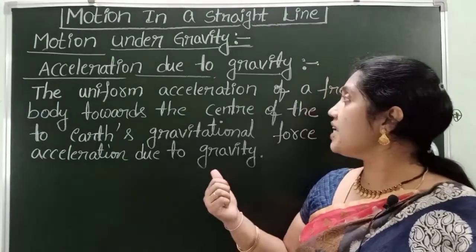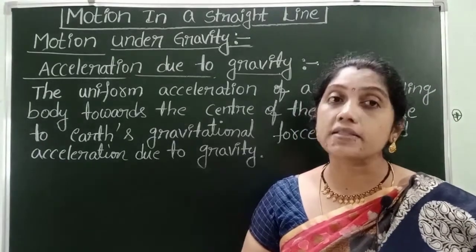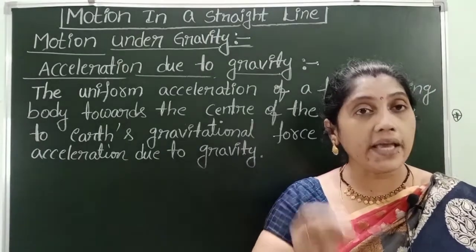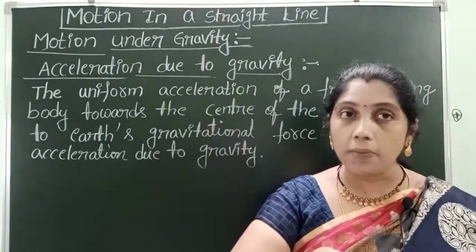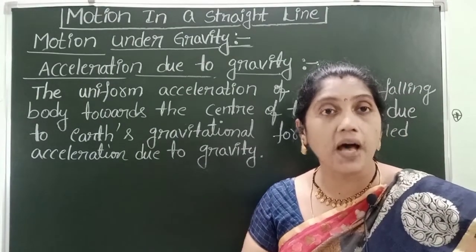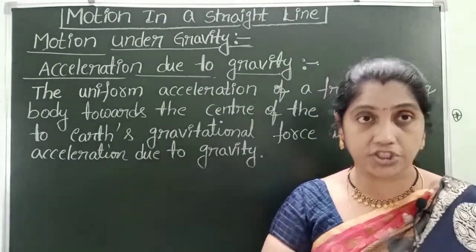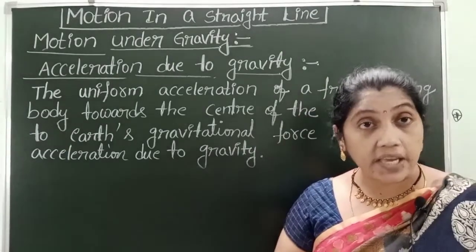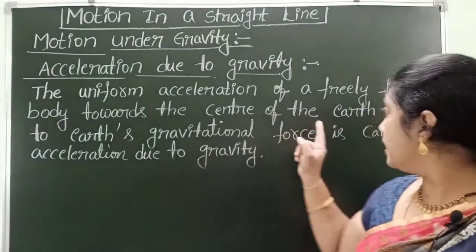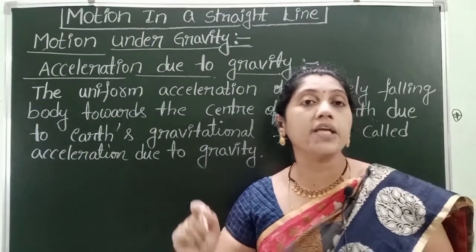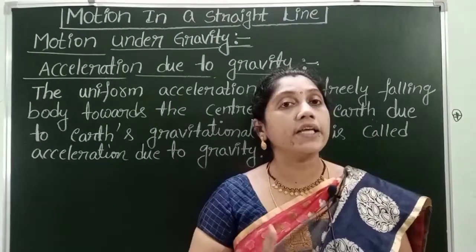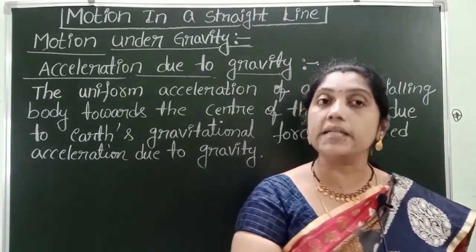First of all, what is acceleration due to gravity? We know acceleration — rate of change of velocity — is called acceleration. When a body is projected in upward direction or in free fall, acceleration is exerted on the object because of the gravitational force of attraction. The uniform acceleration of a freely falling body towards the center of the earth due to earth's gravitational force of attraction is called acceleration due to gravity. The direction of acceleration due to gravity is towards the center of the earth.